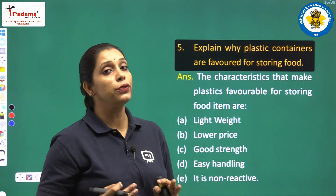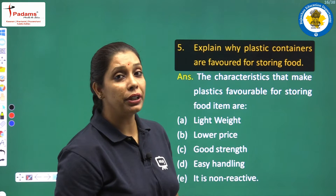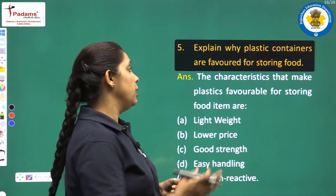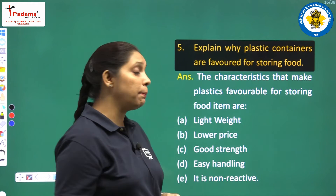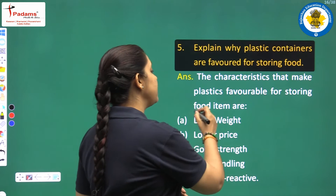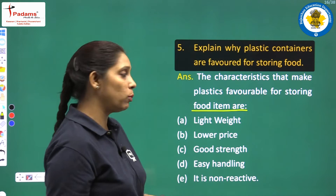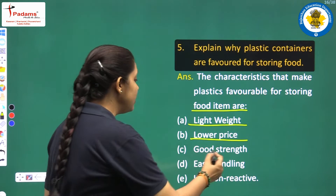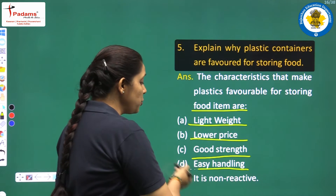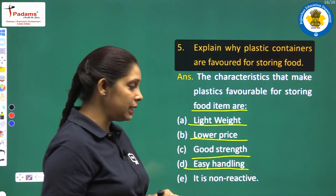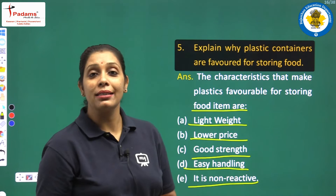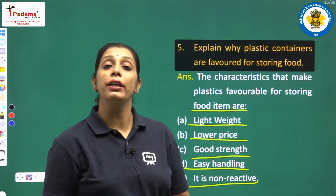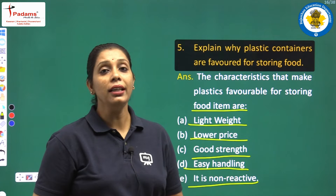Nowadays we are using plastic containers for storing food in our kitchens. We have to give the basic properties or characteristics of why we are using plastic containers. The characteristics that make plastic favorable for storing food items are: plastic is light in weight, it has a lower price, it has good strength, it is easy to handle, and the last important one — it is non-reactive.